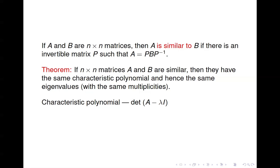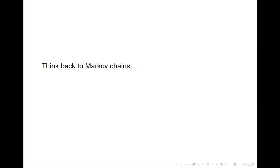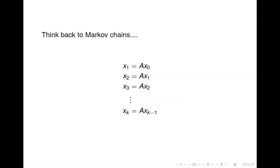Now why is this of interest? Think back to our section on Markov chains. We had the equation where to get X1, we multiplied our transition matrix A times the previous state vector. So X1 is A times X naught, X2 is A times X1, and so forth. So X sub K is A times X sub K minus 1.